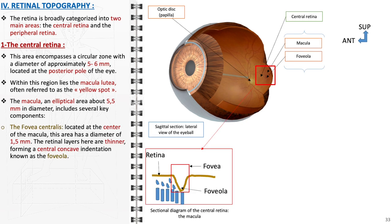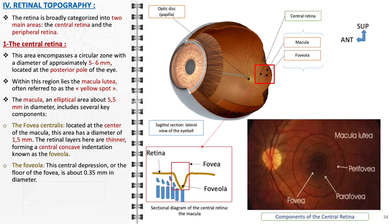The fovea centralis, situated at the center of the macula, this area has a diameter of about 1.5 mm. The retinal layers here are thinner, creating a central concave indentation called the foveola. The foveola, this central depression or the floor of the fovea, measures approximately 0.35 mm in diameter. It contains the highest concentration of cone photoreceptors in the retina, playing a crucial role in achieving sharp central vision.